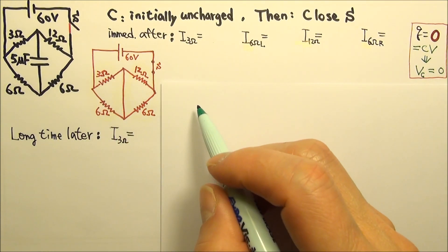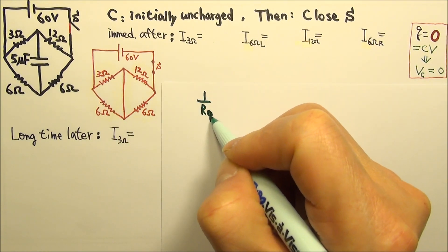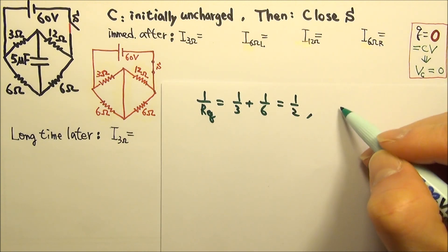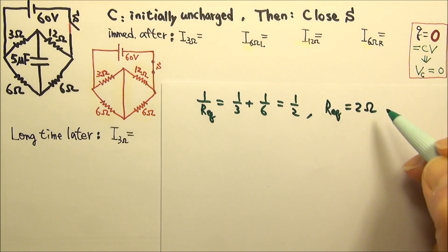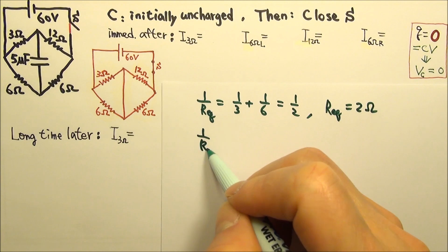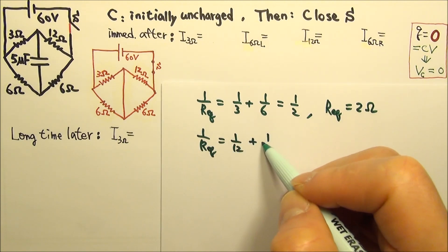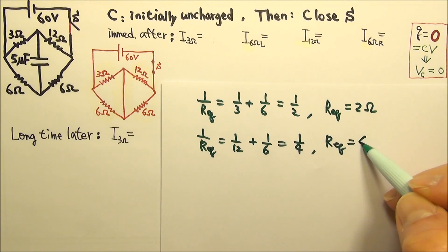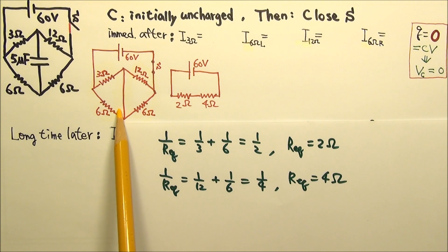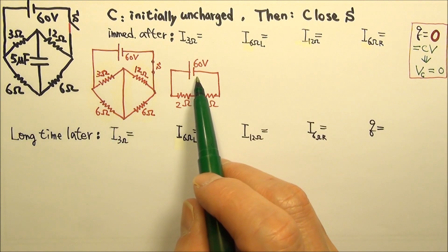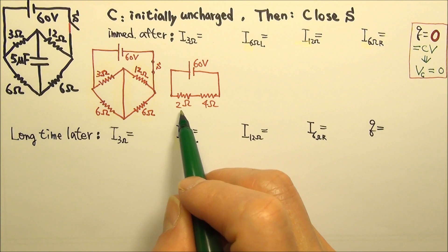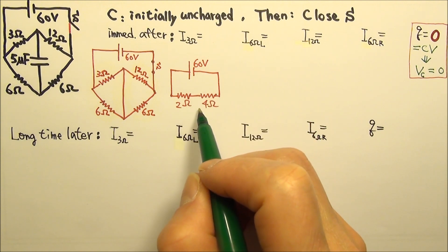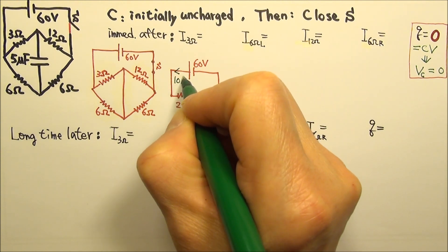We can simplify this circuit by finding the equivalent resistance on each side. On the left side, for resistors in parallel, 1 over R equivalent equals 1/3 plus 1/6, which is 1/2, so the equivalent resistance is 2Ω. For the right side, 1 over R equivalent is 1/12 plus 1/6, which is 1/4, so R equivalent is 4Ω. In the simplified circuit we have 60 volts with 2Ω and 4Ω in series — a total of 6Ω — giving 60 divided by 6 = 10 amps.